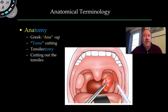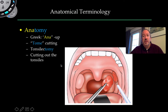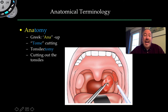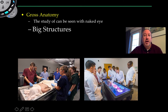Anatomy comes from the Greek meaning 'to cut up.' That suffix is commonly used in medical terminology — for example, a tonsillectomy means to remove or cut out the tonsils.